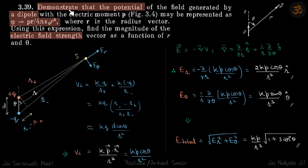So we need to show that potential due to a dipole is p·r divided by 4πε₀r³, and using this expression we need to find the electric field due to a dipole as a function of r and θ.